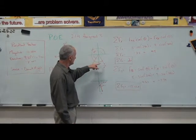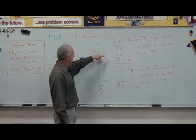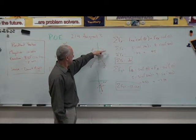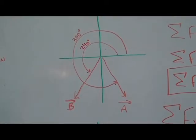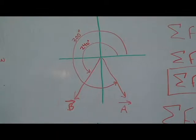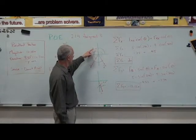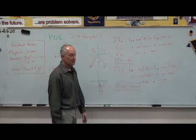They are both 30 degrees from the negative y axis, but if I start from the positive x axis, that means that vector a is 300 degrees off of the positive x and that vector b is 240 degrees off the positive x.